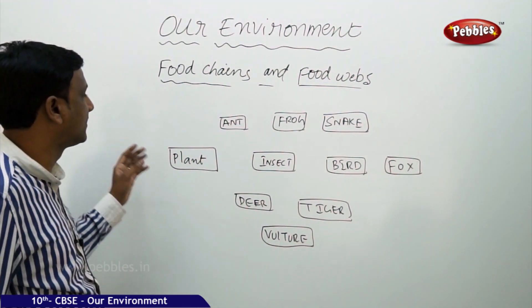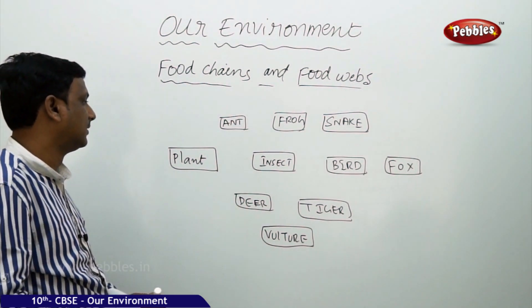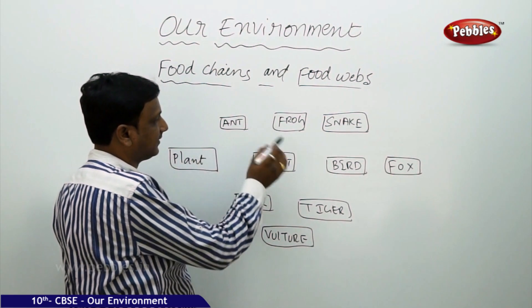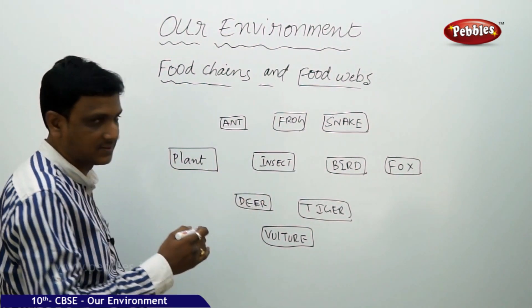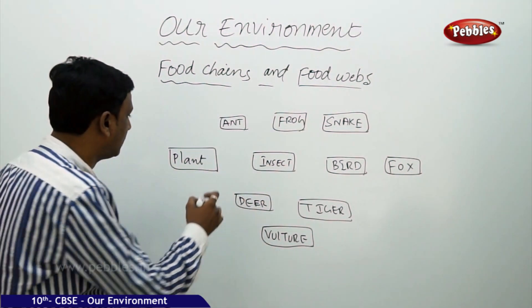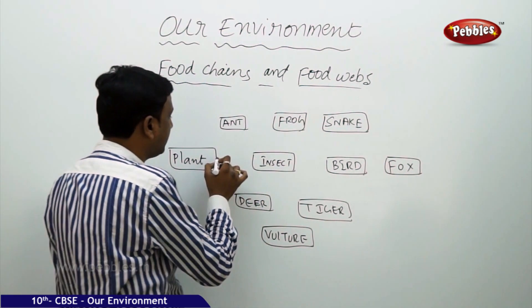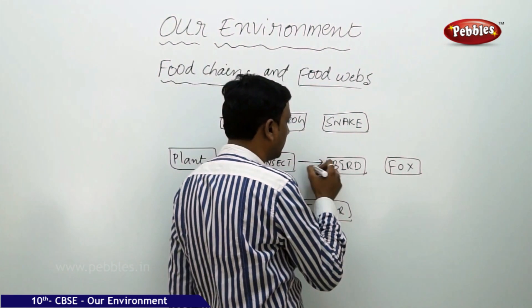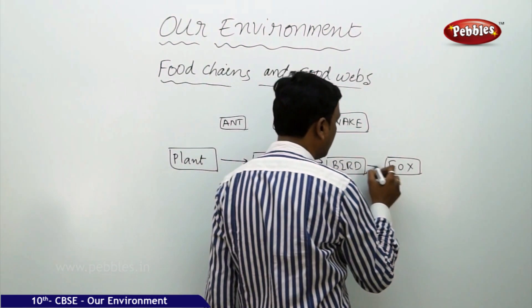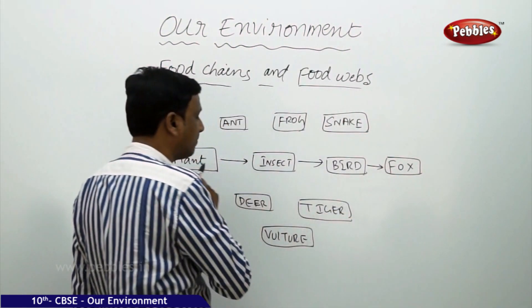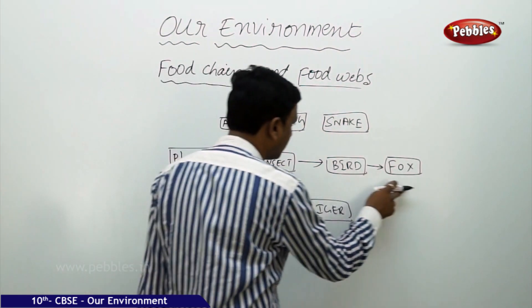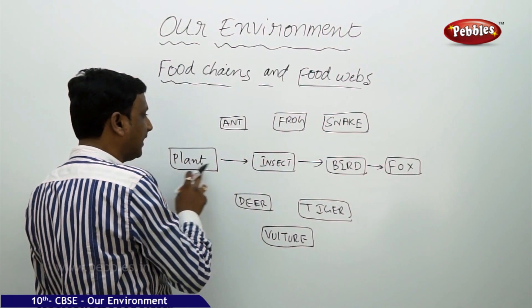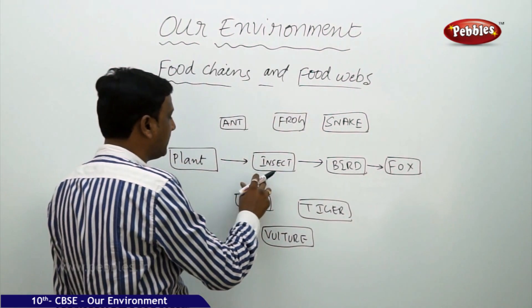Let us see food chains and food webs. Here is the food chain. We see different organisms — it has got some plants and some animals. Plant is eaten by insect, insect is eaten by bird, bird is eaten by a fox. Now you can find a relation here — the relation looks like a chain.